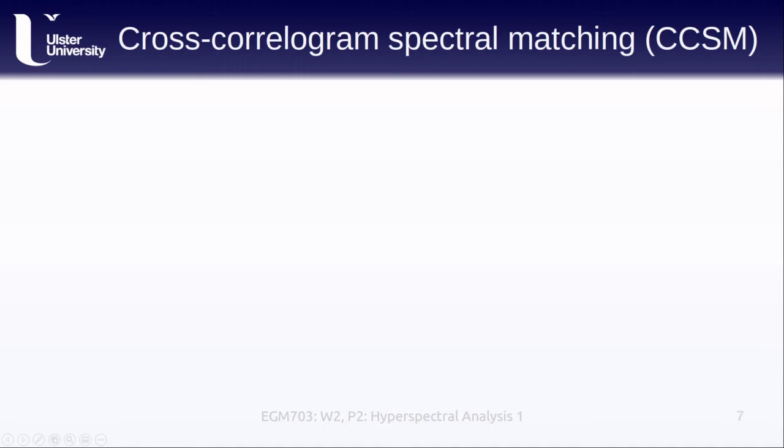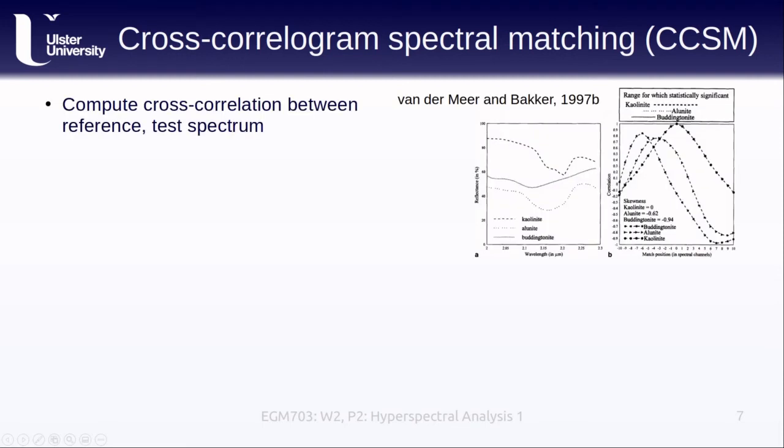Another approach that attempts to identify the surfaces or materials present in each pixel is known as cross-correlogram spectral matching, or CCSM. With this method, we're actually computing the cross-correlation between a reference spectrum and the spectrum for a given pixel. In the example here, we have three potential end-member minerals: kaolinite, alunite, and buddingtonite, with the corresponding spectral signatures shown here.